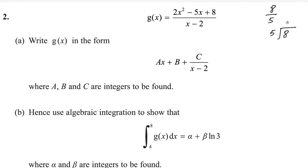For 8 divided by 5: there is 1 only. 1 times 5 is 5. We subtract and get the remainder as 3. This is the whole number, and 3 over 5 becomes the fraction. So you can change this into 1 plus 3 over 5.